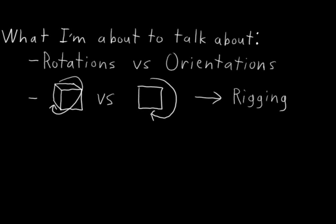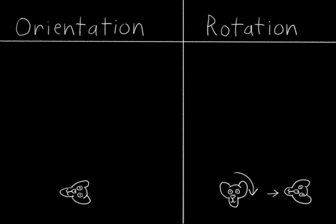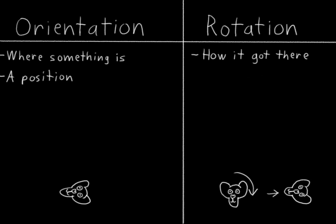So let's start with the difference between rotation and orientation. In short, orientation is where something is, and rotation is how it got there. Or in other words, orientation is a position, and rotation is a change in position. Hopefully that's fairly intuitive right off the bat, but I'm going to give some examples to help illustrate.